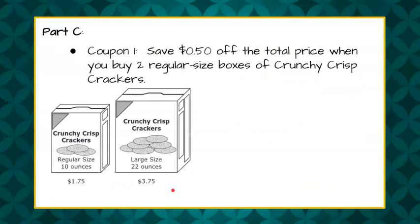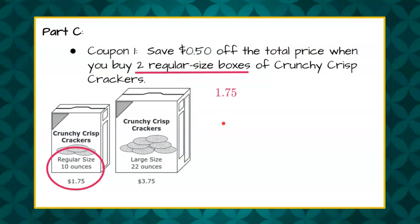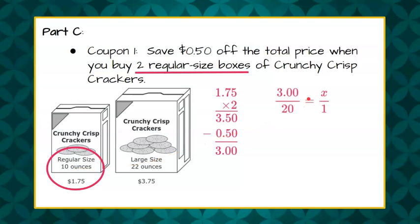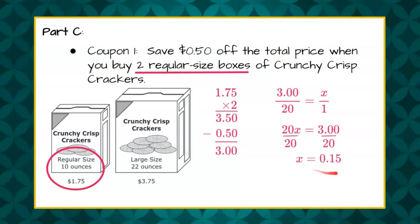So we want the lower price per ounce, and we're going to calculate coupon one first — save 50 cents off the total price when we buy two regular boxes. So $1.75 times two is $3.50. Now we take off our 50-cent coupon, and we pay $3 for the two boxes — that's $3 for 20 ounces. Cross product: 20 times X equals 3. Divide both sides by 20, and X equals 0.15, which is 15 cents per ounce for two regular-sized boxes with coupon one.